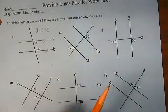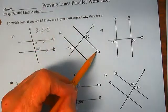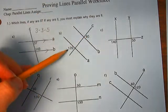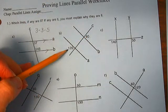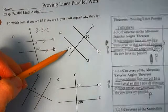Problem B. We have two lines cut by a transversal. These are alternate exterior angles. Do we know anything about alternate exterior angles?